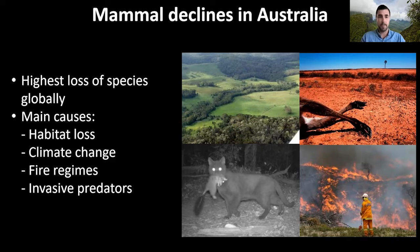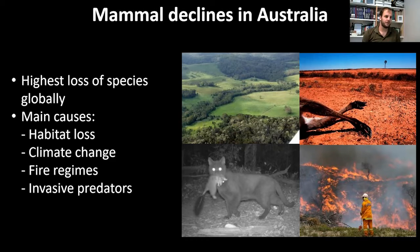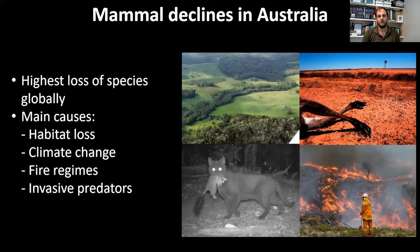Australia has the unenviable title of having the highest loss of species globally in the last 200 years. 27 endemic mammals have gone extinct; in comparison, only one has gone extinct in the USA in the same period. This is unusual because predictors of mammalian decline are usually tied to high human population density, lack of habitat protection, significant habitat alteration, and poverty.